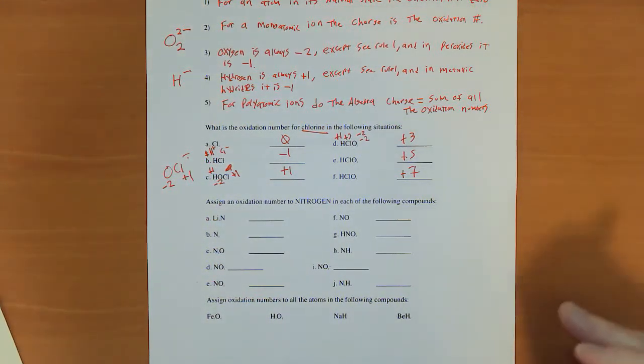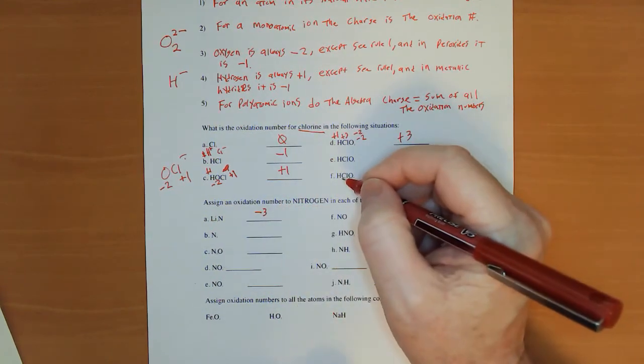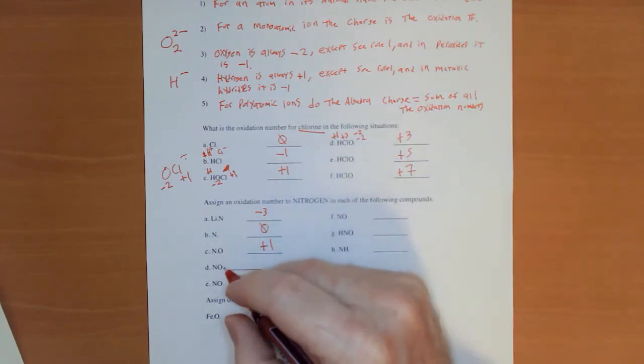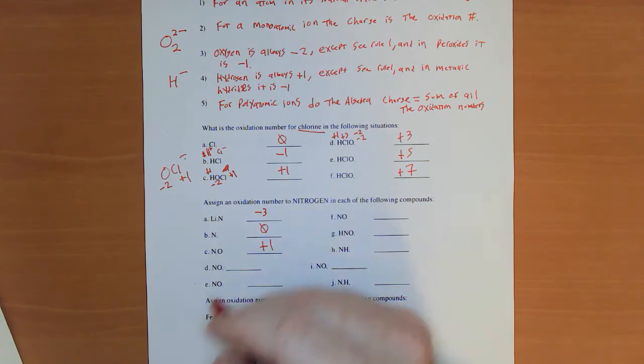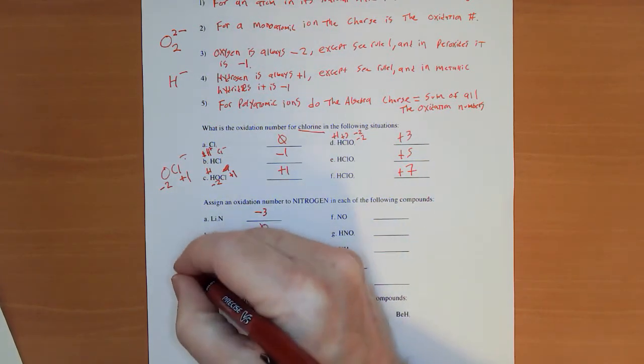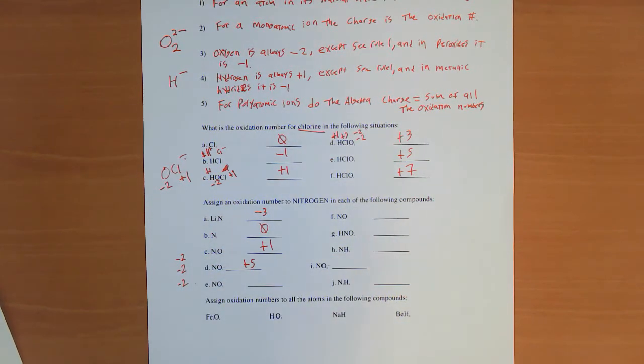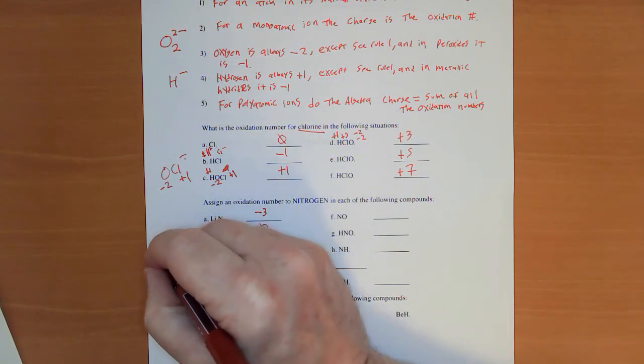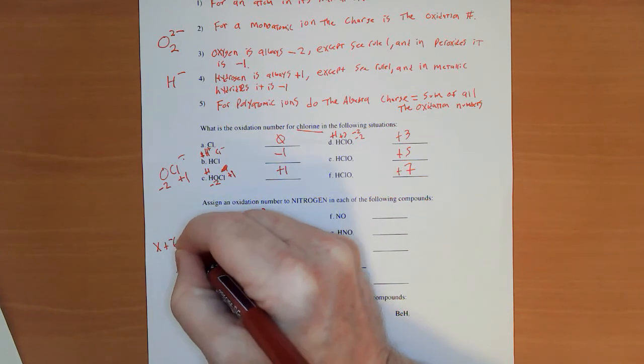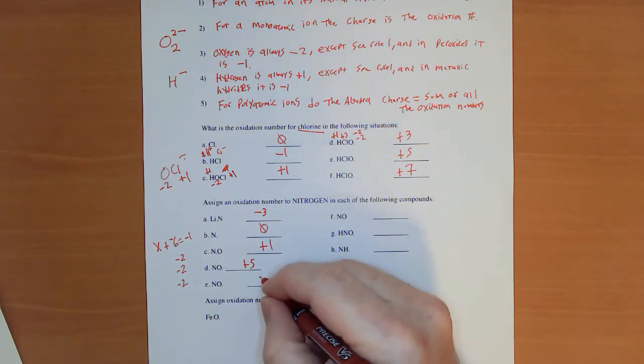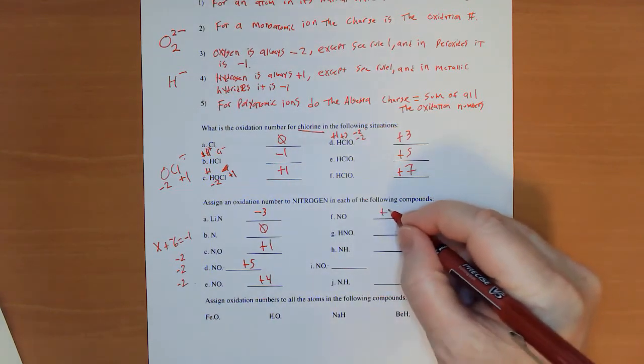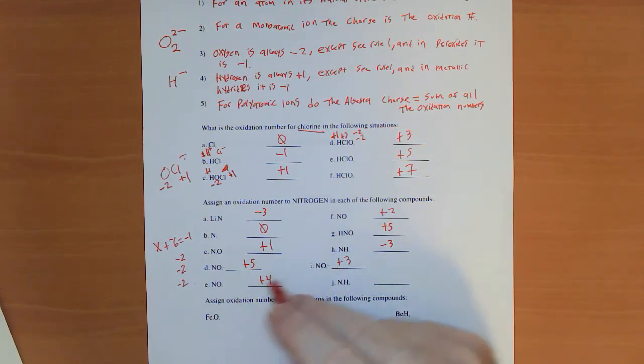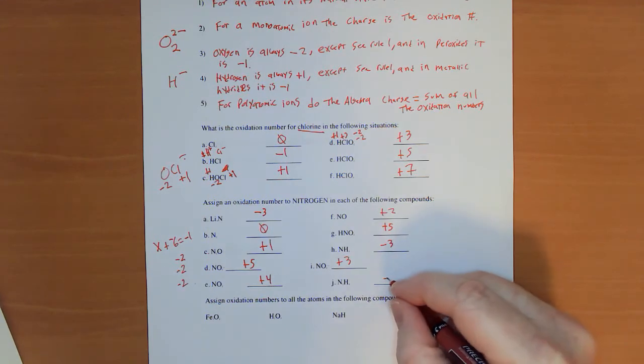Okay. Welcome back. I'm hoping you found a negative three there because the lithiums are plus one. A zero. A plus one. So the oxygen's a minus two and you got two nitrogens. Here we have a plus five because you got a negative two, negative two, negative two for the three oxygens. And there's a minus one that's left over. So it's almost like saying x plus negative six equals negative one. Here we got a plus four. We got a plus two, a plus five, a minus three, plus three. And a negative two.